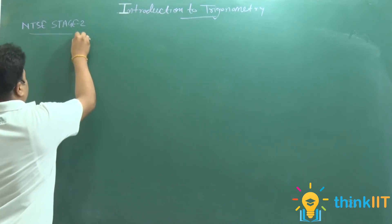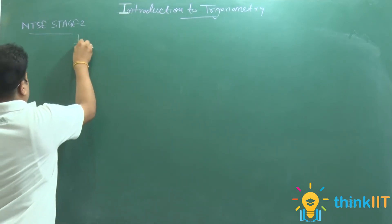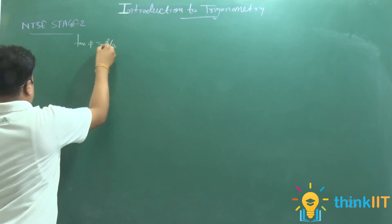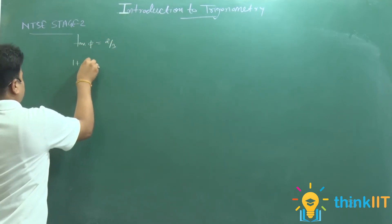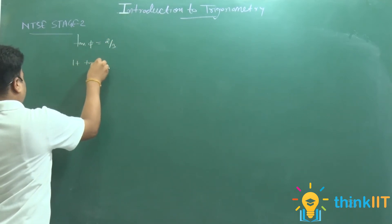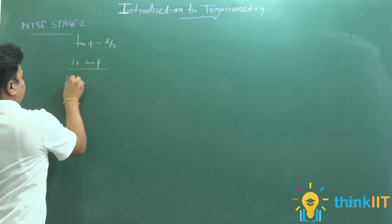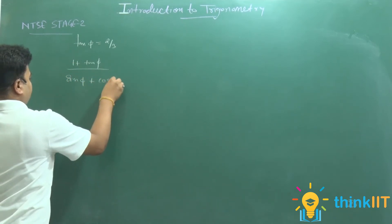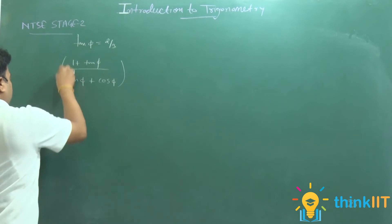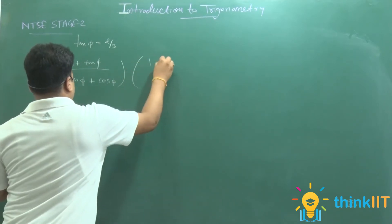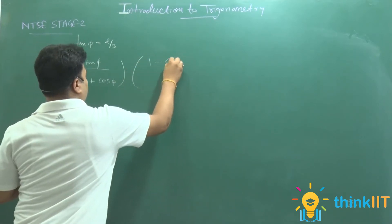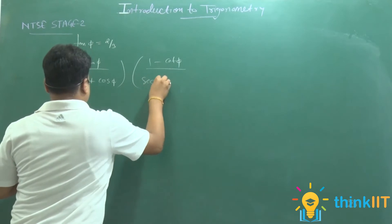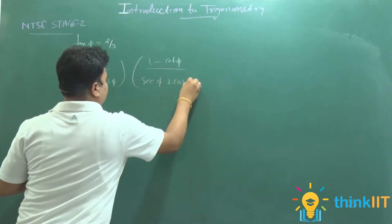मुझे इसकी value निकालनी है। आपको सबसे पहले दिया हुआ है कि tan θ = 2/3 के equal हैं। तो पहला bracket है: (1 + tan θ) / (sin θ + cos θ), और दूसरा है: (1 − cot θ) / (sec θ + cos θ)।